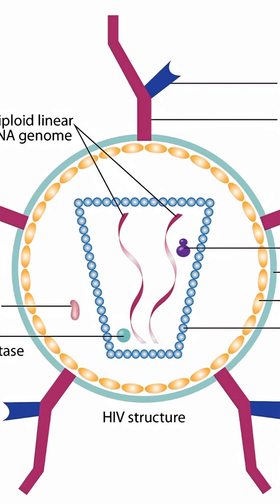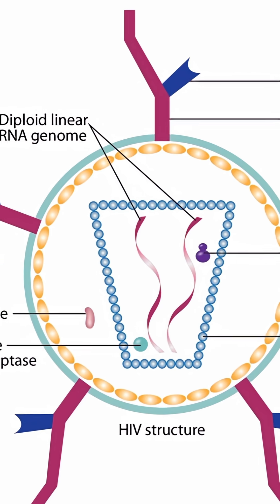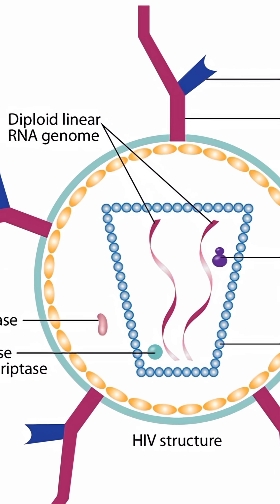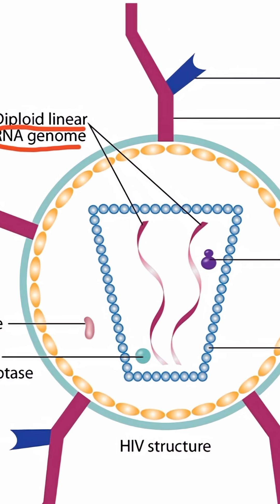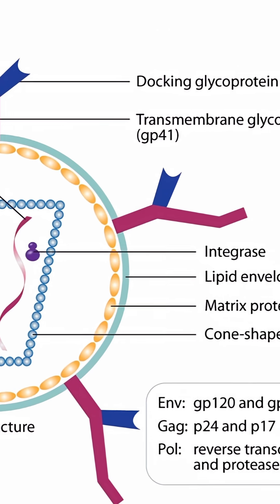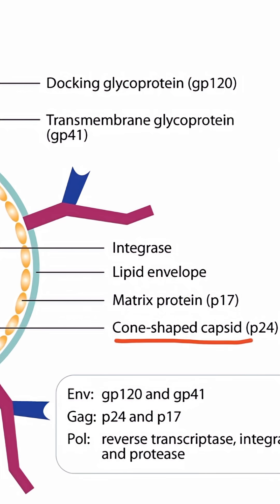Before we get into the image mnemonic, let's take a step back and understand HIV from a conceptual standpoint first. As you can see, this is an image of the structure of HIV. Notice that it has two copies of linear RNA, so it has a diploid linear RNA genome. Surrounding the genome is a cone-shaped capsid.